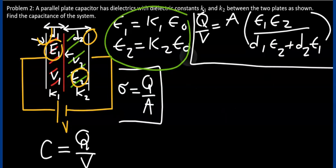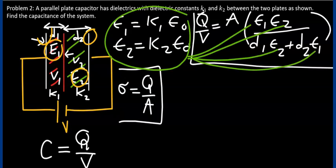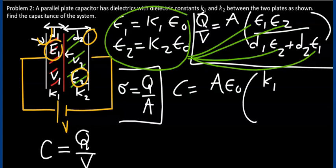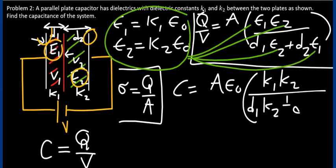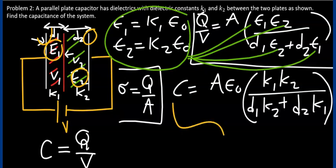And substituting the results for ε1 and ε2 respectively, we get the following result for the capacitance of this capacitor: A·ε₀·K1·K2 over D1·K2 plus D2·K1. And that solves the problem. Thank you for watching.